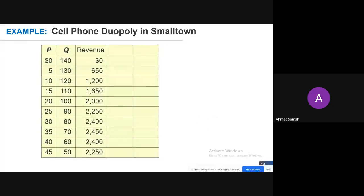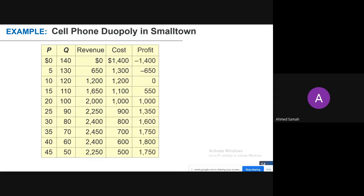Revenue is simply price times quantity to get total revenue at each quantity. Their cost is simply quantity multiplied by the marginal cost of ten dollars. Profit is the difference between total revenue and total cost. Profit equals zero at quantity 120, increases until quantity 60, and then falls at quantity 50.